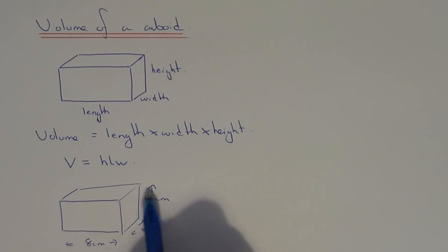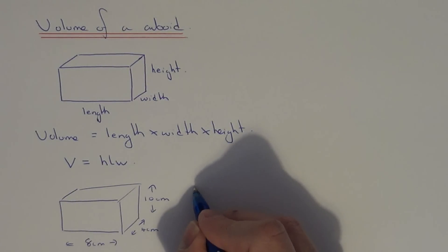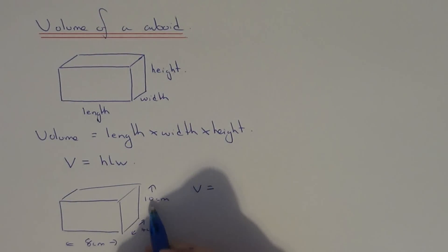To work out the volume of this cuboid, all we need to do is multiply the three side lengths together. It doesn't matter which order you do this in.